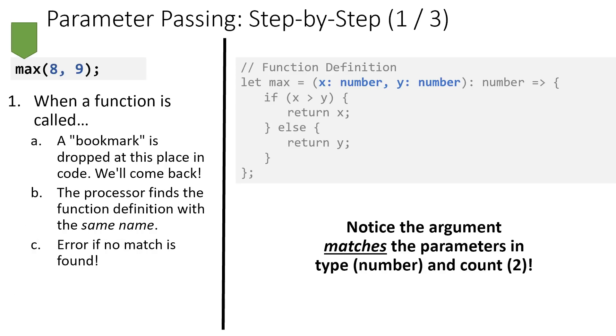Let's talk about how arguments are passed to parameters, and this process is an important one to understand. When a function is called, the processor is going to drop a bookmark. We're going to come back here, and then it's going to go find where is the definition of this function and try and find a function definition with the same name of the function that you're trying to call. You'll have an error if you try and call a function whose name doesn't exist with a definition.